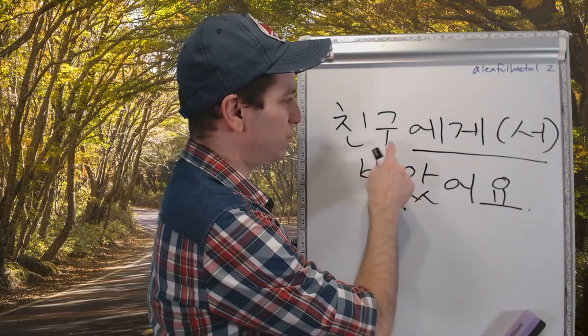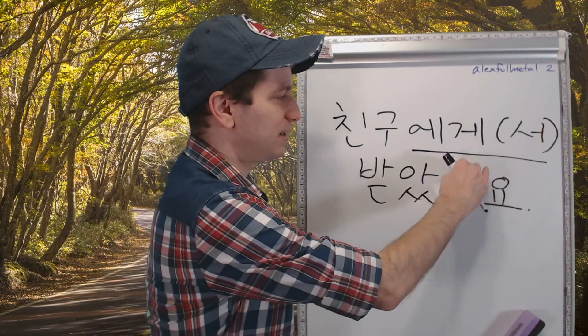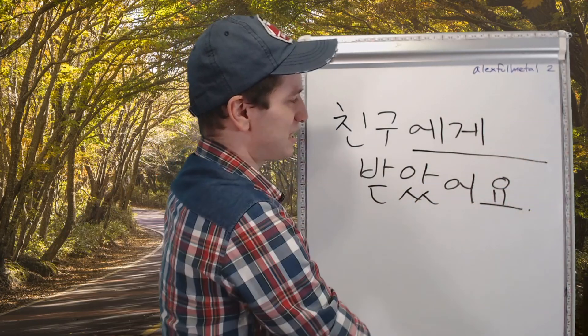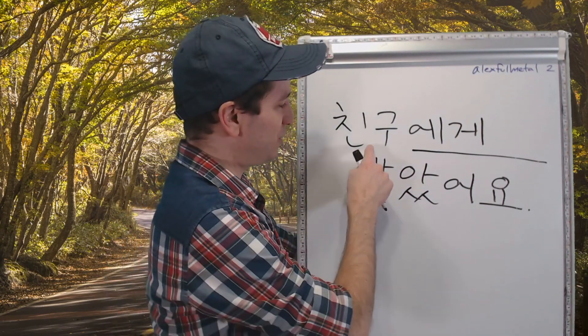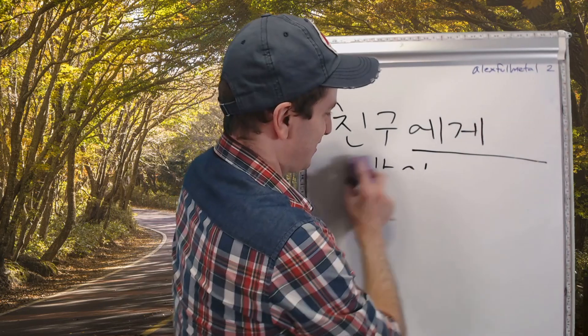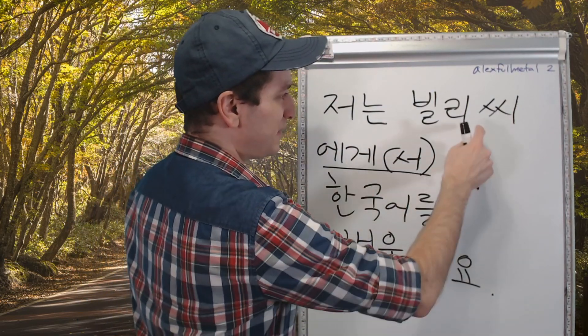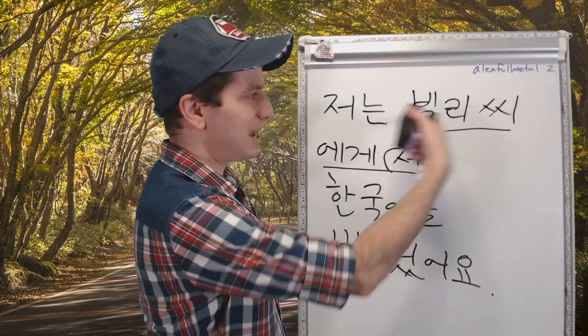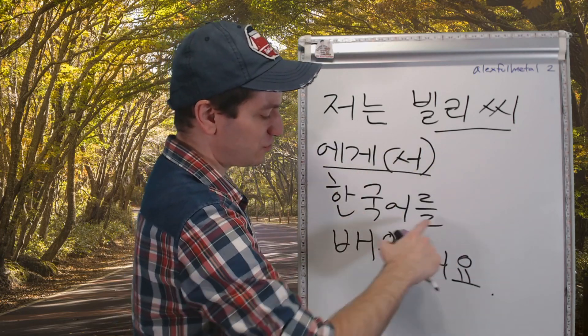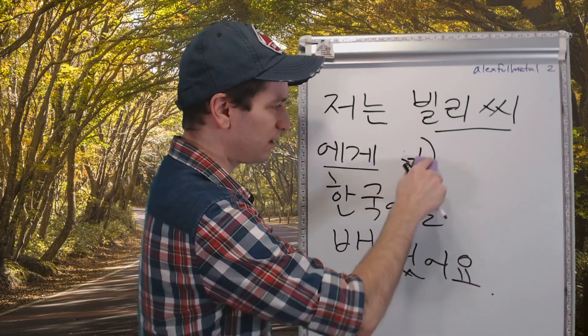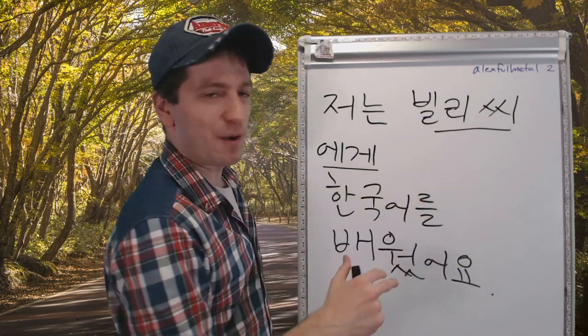Let's do our next example. 친구에게서 받았어요. I received it or I got it from a friend. We could also just say 친구에게 받았어요. I got it from a friend. 저는 빌리 씨에게서, from Billy, 한국어를 배웠어요. I learned Korean from Billy. 저는 빌리 씨에게서 한국어를 배웠어요. Or 저는 빌리 씨에게 한국어를 배웠어요. I learned Korean from Billy.